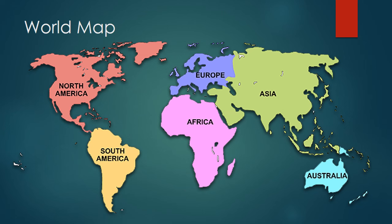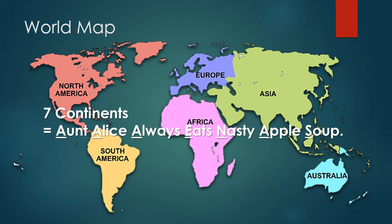Here's a world map. This should be reviewed from third grade — the seven continents: North America, South America, Europe, Africa, Asia, and Australia. There's a fun way to remember them with a silly sentence: 'Aunt Alice always eats nasty apple soup.' If you take the first letter of each of those words, they are the first letter of the seven continents.